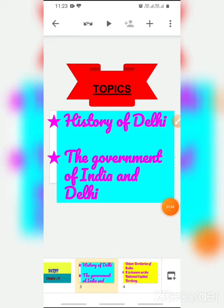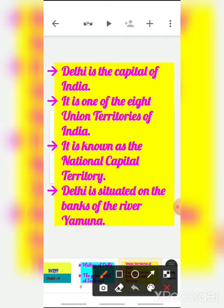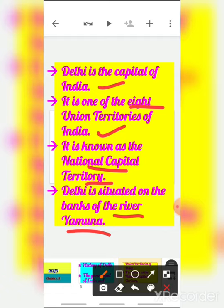Now let's begin with the history of Delhi. Delhi is the capital of India and it is one of the eight union territories of India. Delhi is also a union territory, known as the National Capital Territory because Delhi is the capital of India. Delhi is situated on the banks of the river Yamuna — just like Uttarakhand is situated on the banks of the river Ganga.